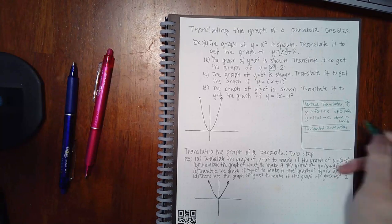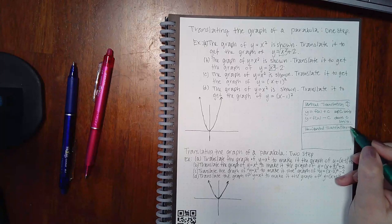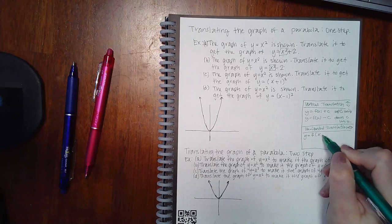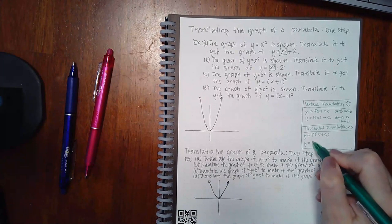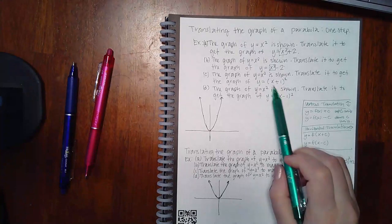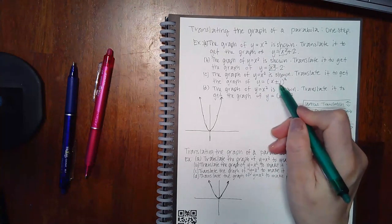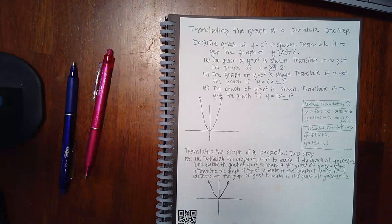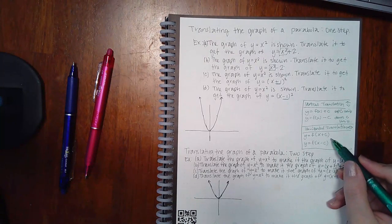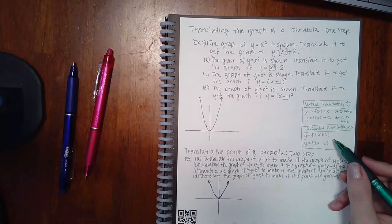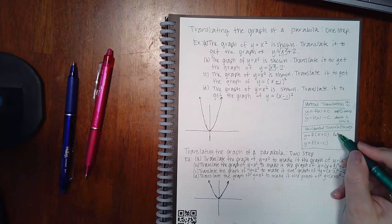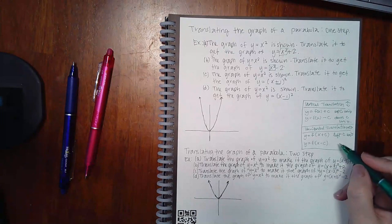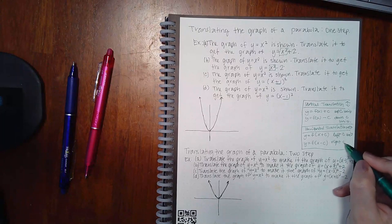For horizontal translation — a left or right motion — you're adding or subtracting inside the basic function. For example, adding one on the inside of the square, or subtracting one inside the parent function. When you're adding inside the basic function it actually does the opposite of what you'd think: it makes the graph go left that number of units. Subtracting on the inside makes it go to the right that number of units.